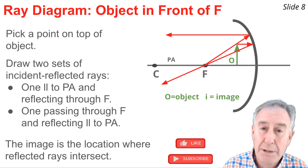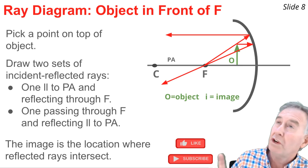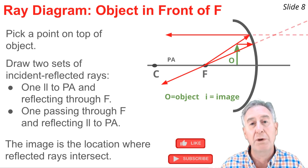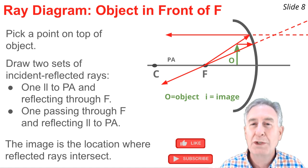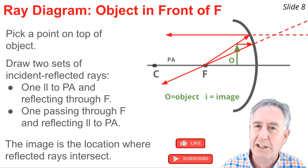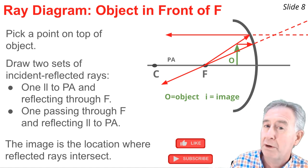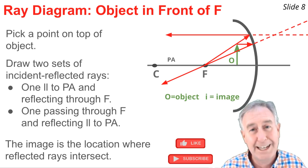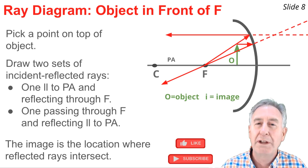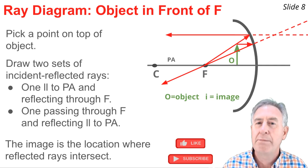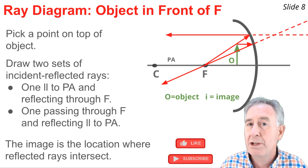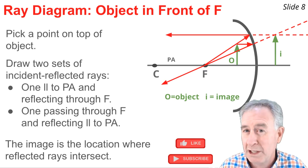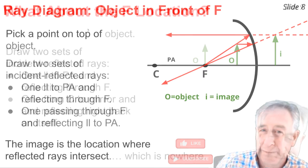To find the image location, you have to force these two reflected rays to intersect by dashing them backwards behind the mirror. Using dashed extension lines, I extend these reflected rays backwards and notice they intersect above the principal axis and behind the mirror. So if the object stands above the principal axis, the image also stands above the principal axis and goes from the principal axis up to this intersection point.